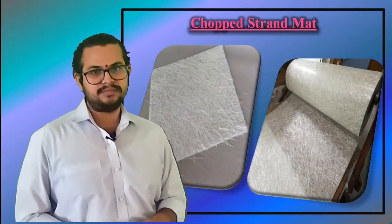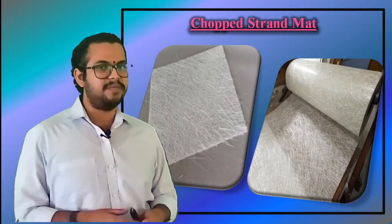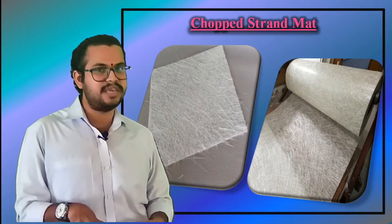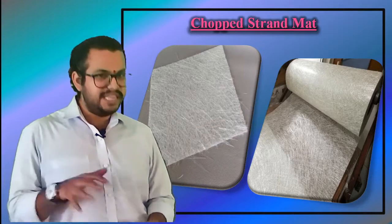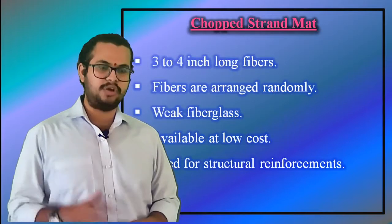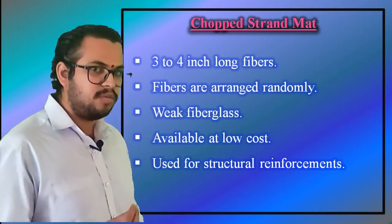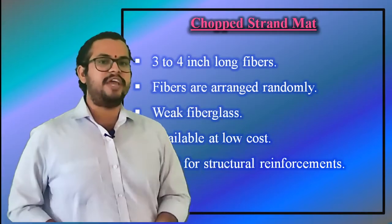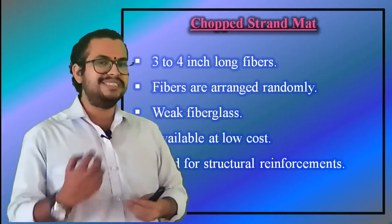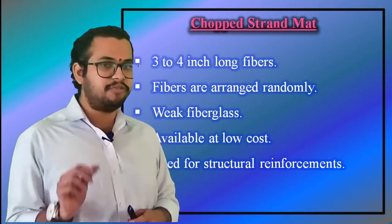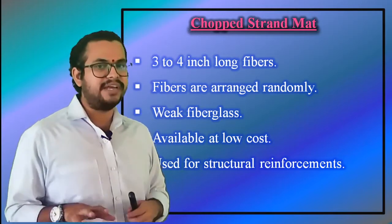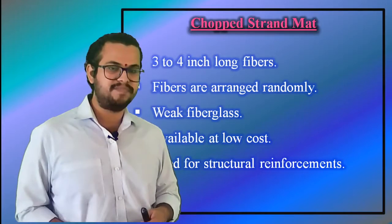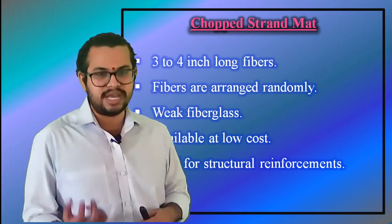Chopped strand mat. The length of fibers in this form of fiberglass is 3 to 4 inches. Unlike woven fabrics, the fibers in chopped strand mats are arranged randomly without any fixed orientation. Fiberglass in this form is not very strong because the fiber length is quite short. However, it is the least expensive and therefore the most commonly used. Due to the random orientation of fibers, the print-through of gel coats is effectively hidden. Fibers used for structural reinforcement generally fall into E-glass, AR-glass, and S-glass categories. Of these, E-glass is by far the most used and least expensive.